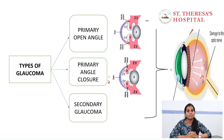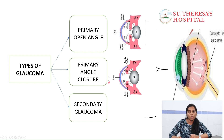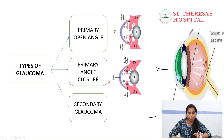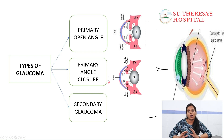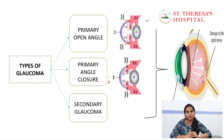The most common are open angle and angle closure. Open angle and angle closure are basically anatomical structure terms. This refers to the draining point — there are angles at these points. So the angle is open in open angle glaucoma, and closed in closed angle glaucoma.